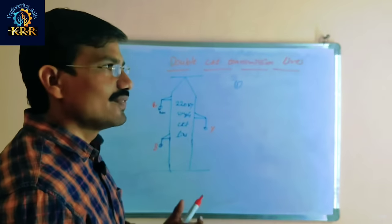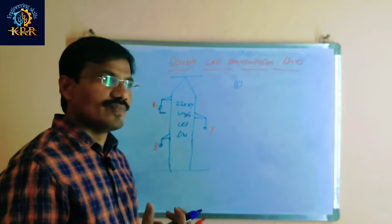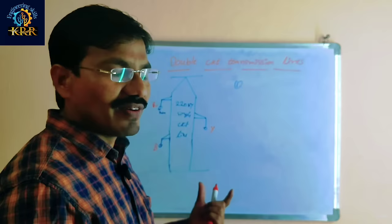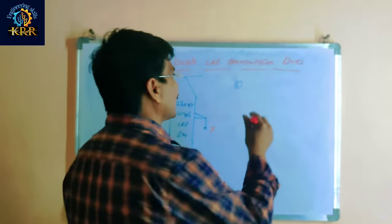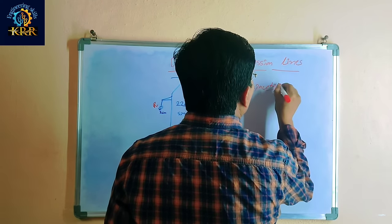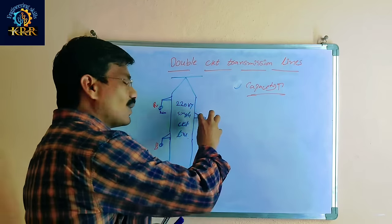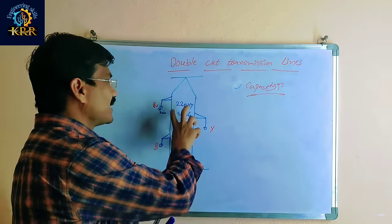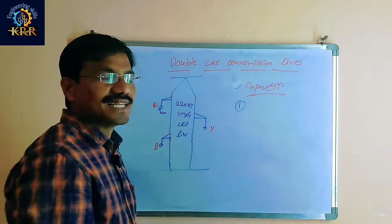Basically, nowadays the power consumption is increasing day by day. The corresponding power generation is also increasing, and the power transmission is also increasing. For that purpose, the capacity is increasing. We already have installed a single circuit transmission line at 220 kV voltage. Now the capacity is increasing — what will we do?